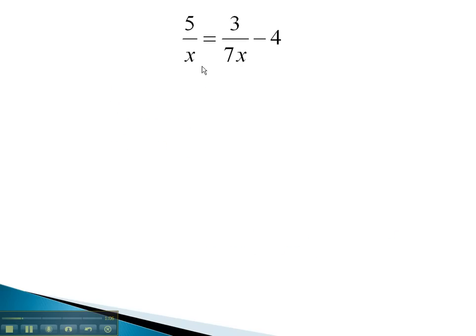In this problem, finding our least common denominator, we see the number 7 and the variable x in the denominators. We will multiply each term by the 7x. This includes the minus 4, which is not a fraction.